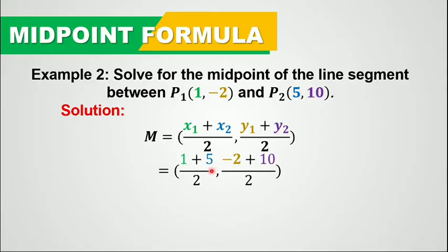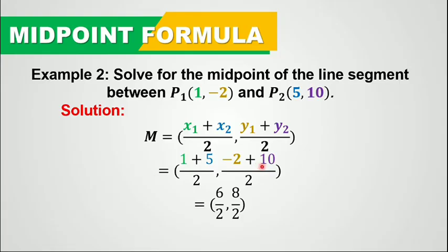Now let's substitute the values. Using the formula m equals x1 plus x2 all over 2 and y1 plus y2 all over 2: x sub 1 is 1 and x sub 2 is 5 — let's add them and divide by 2. Then y sub 1 is negative 2 plus y sub 2 which is 10, so negative 2 plus 10 all over 2. Remember that the 2 in the denominator is constant.